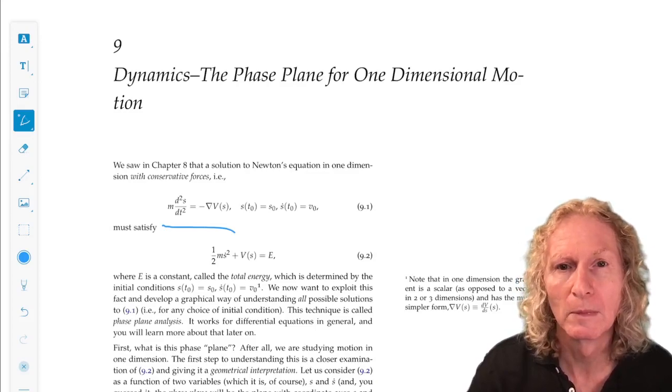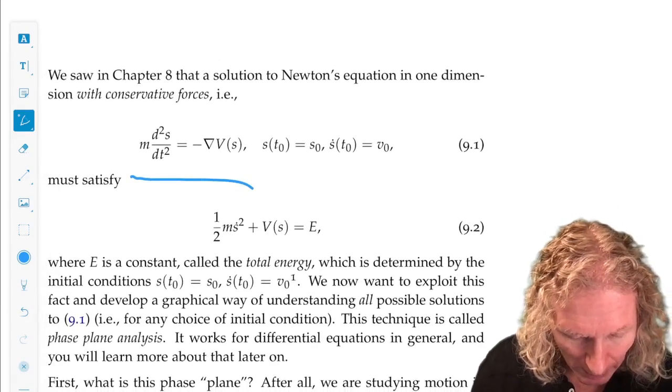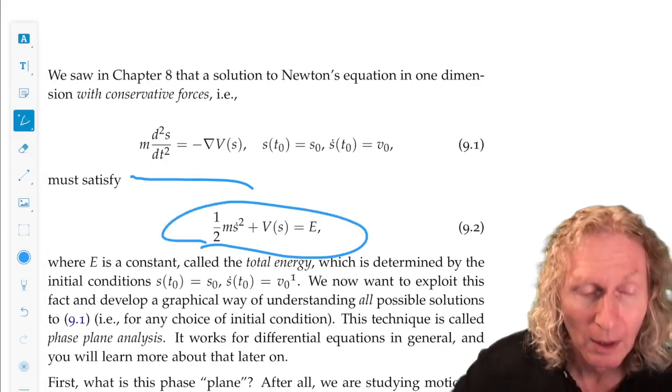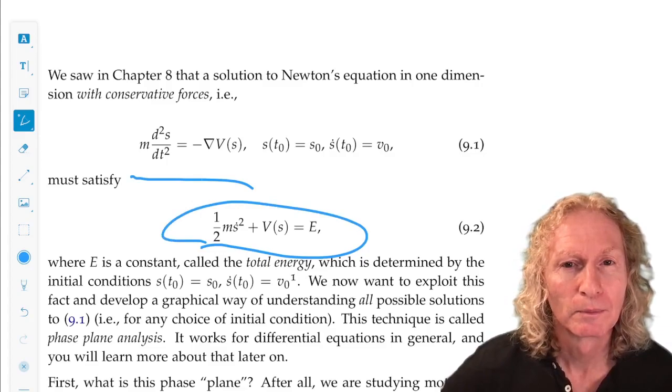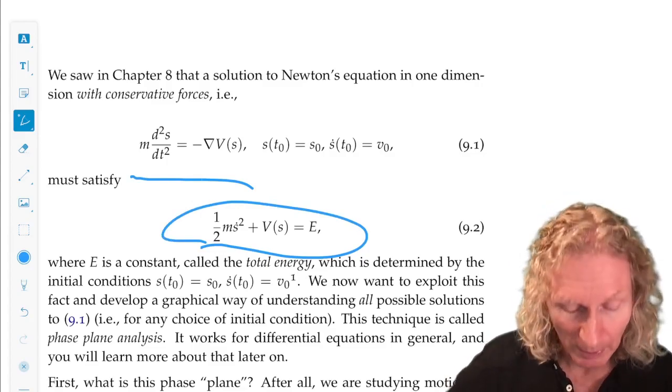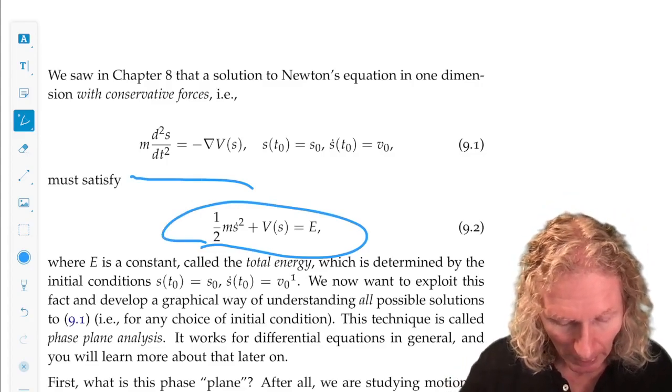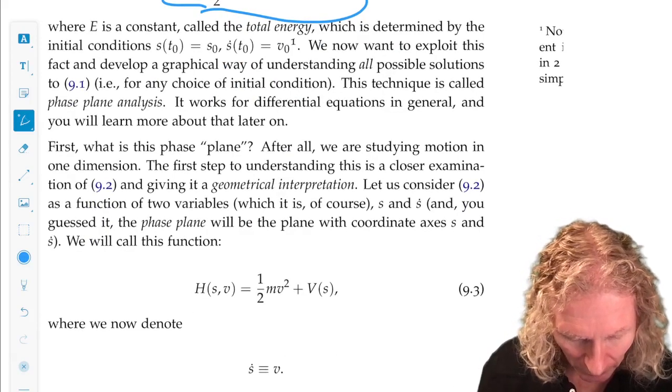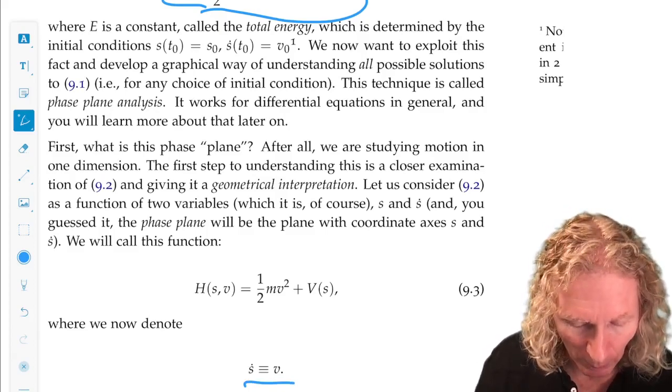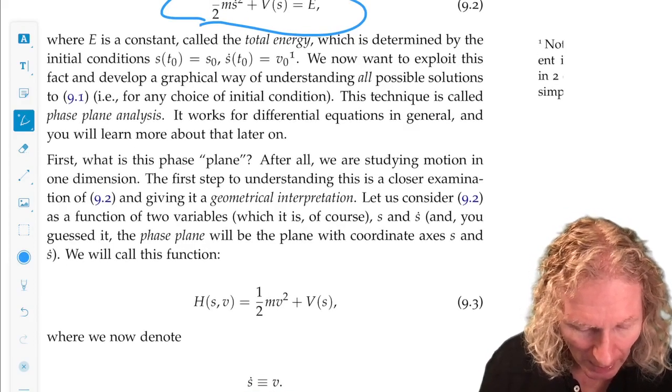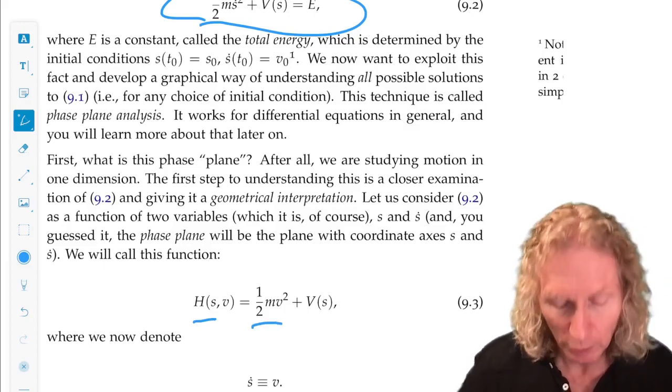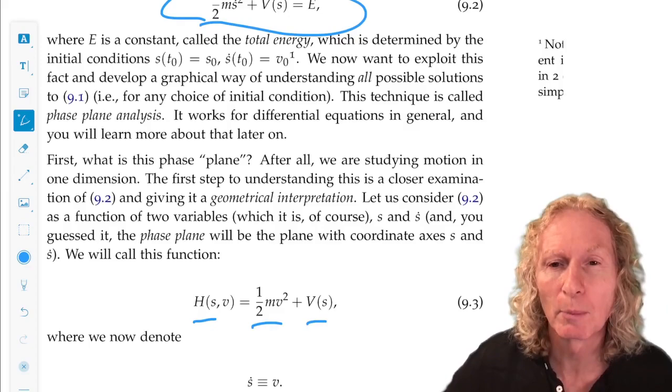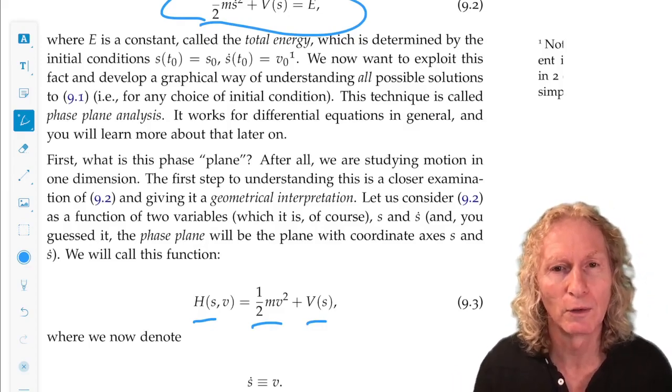So we know that there is this function that is constant on trajectories, and that's the energy function. And we write the velocity as v, just to be a more familiar terminology. And the energy function is kinetic energy plus potential energy. So the phase plane is the plane on which the energy function is defined.